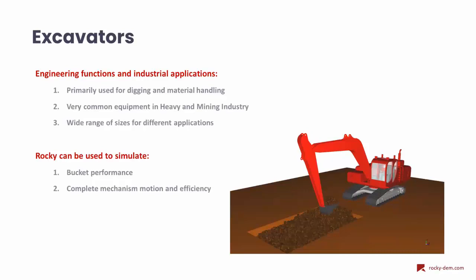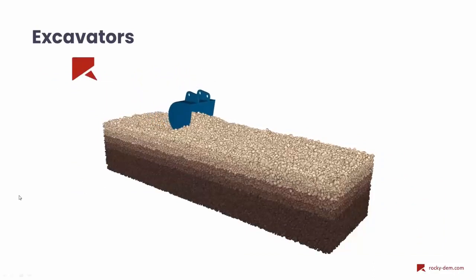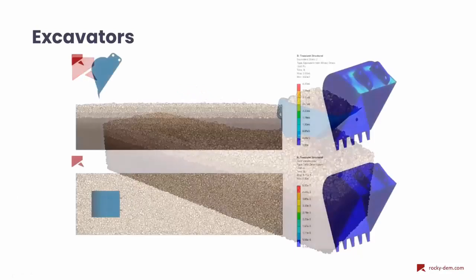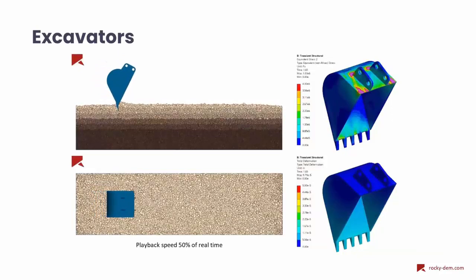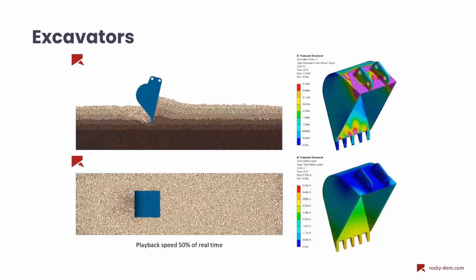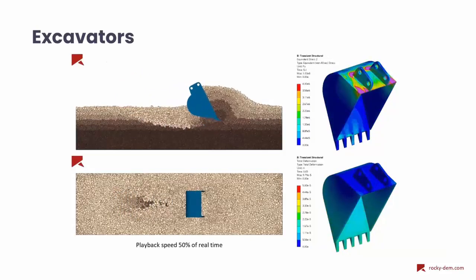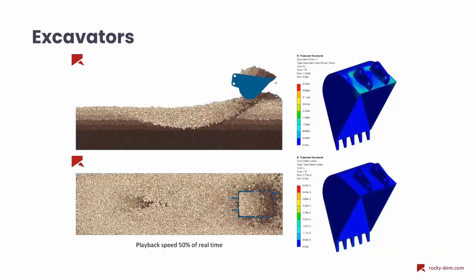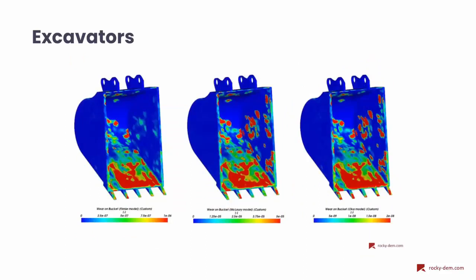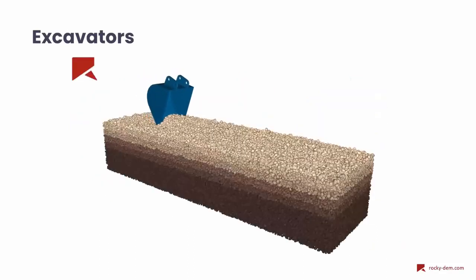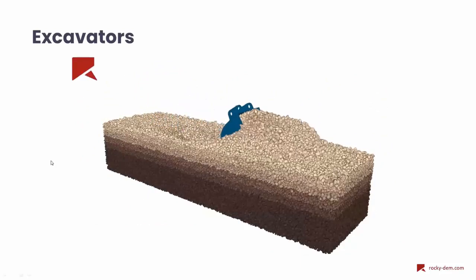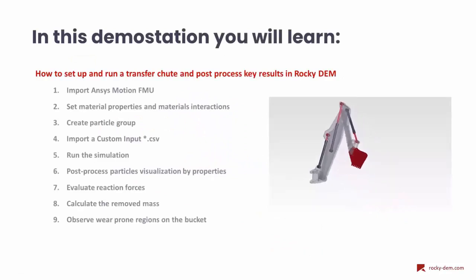Or we can consider the whole excavator — the boom, arm, and even the actuators — to bring accuracy to the complete motion. As a quick example, we are focusing on the bucket analysis where all the rest of the equipment is not considered. We are doing a coupled analysis with Mechanical and structural analysis, so the loads caused by the particles are exported to Mechanical where we can evaluate stress, displacement, and wear patterns on the bucket itself.